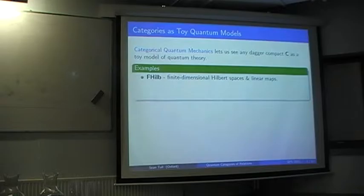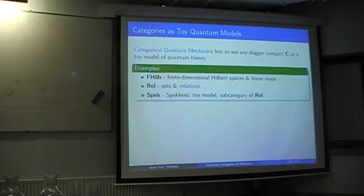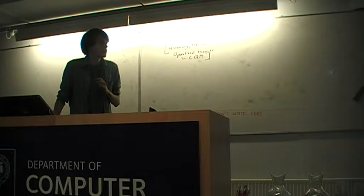The main one, of course, is FHilb, finite dimensional Hilbert spaces — the category we're really trying to understand where all the definitions come from. Other than that, the main one people have looked at is REL, the category of sets and relations, normally interpreted as representing non-deterministic computation. REL is studied because it acts very differently from FHilb and gives weird, unusual behaviour. The main category people have also looked at is Spec, which corresponds to Spekkens' toy model as a subcategory of REL, though it's quite complicated as a category.